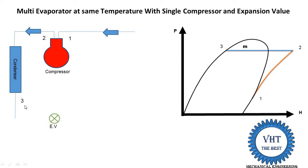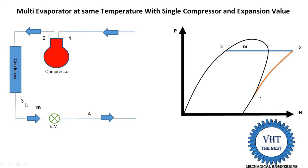This high pressure liquid refrigerant is supplied into the expansion valve. Process 3 to 4 takes place in the expansion valve — 3 is high pressure, 4 is low pressure. Expansion of the refrigerant takes place, and this process is known as isenthalpic expansion. Isenthalpic means enthalpy remains constant, so the enthalpy at the entry equals enthalpy at the outlet: h3 equals h4.